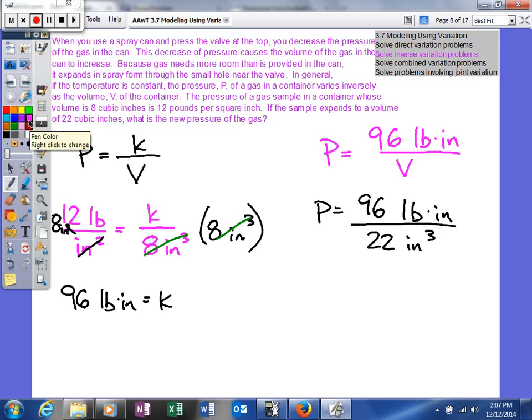We don't even have to solve for P. It's already solved. This will cancel and leave us just 2. So our answer is going to be in pounds per square inch.